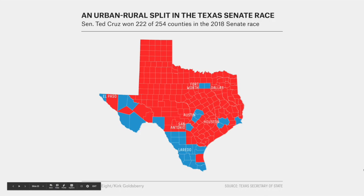Here's a map that became very popular after the most recent Texas election. It tells several stories: which counties went for Ted Cruz versus Beto O'Rourke — counties with big cities went Democrat, most rural counties went Republican. Ted Cruz won 222 out of 254 counties, but the race was really close, which tells you the counties Ted Cruz won have fewer people in them. Politicians are looking at maps like this and analyzing them. There are lots of stories to tell in simple maps like this.